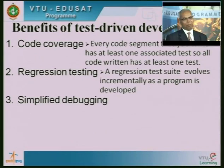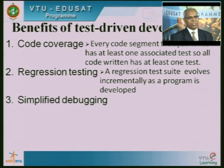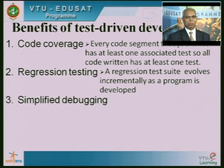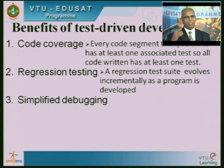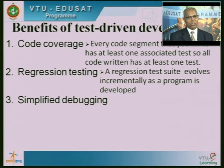Third, simplified debugging. Because you are testing only a small piece of code, once it fails, it will be immediately known to you what the problem is in your code. It becomes easier to debug. If you write the entire code and find a problem at the end, you do not know which area has the problem. With TDD, we develop incrementally and test each increment, so if the problem is localized, it is easier to debug. Development goes faster and the code is reasonably bug-free.